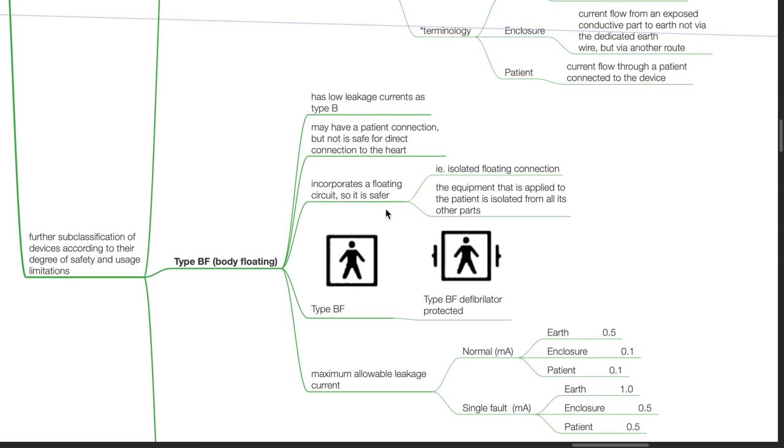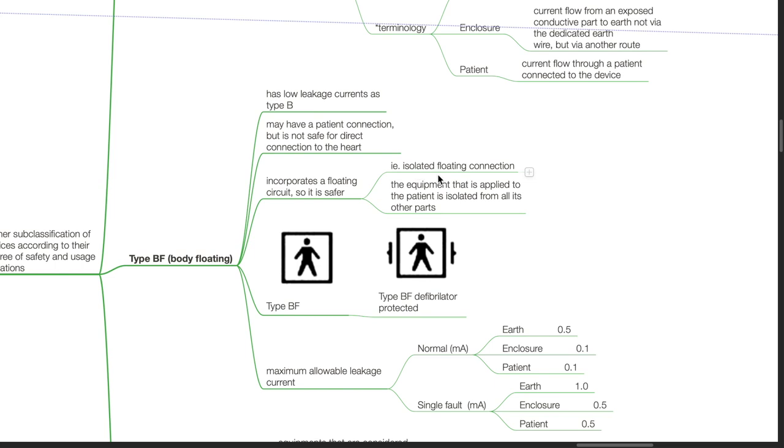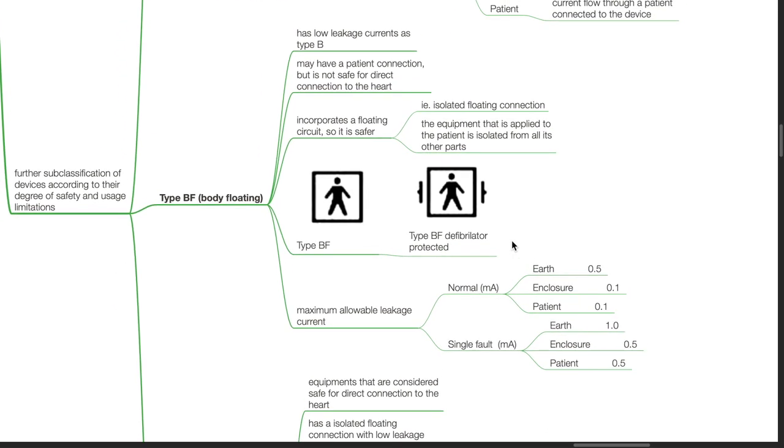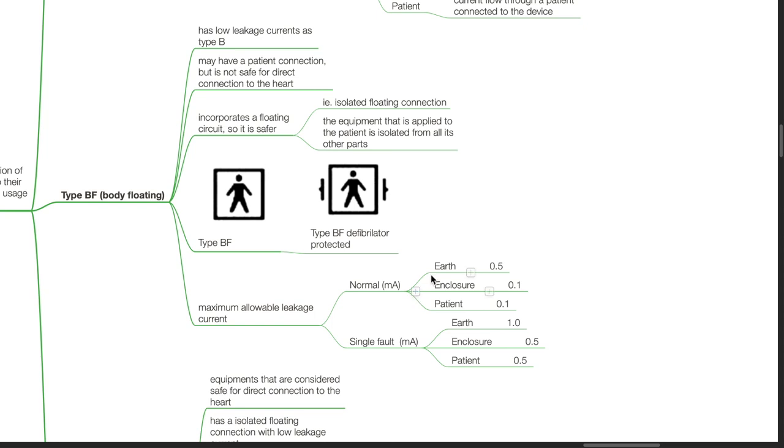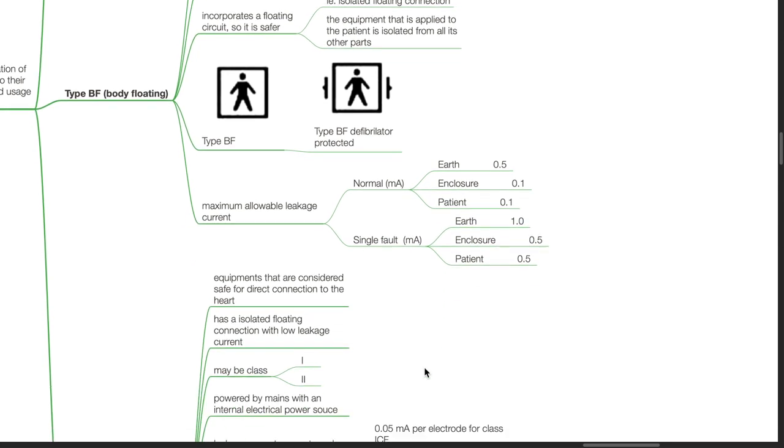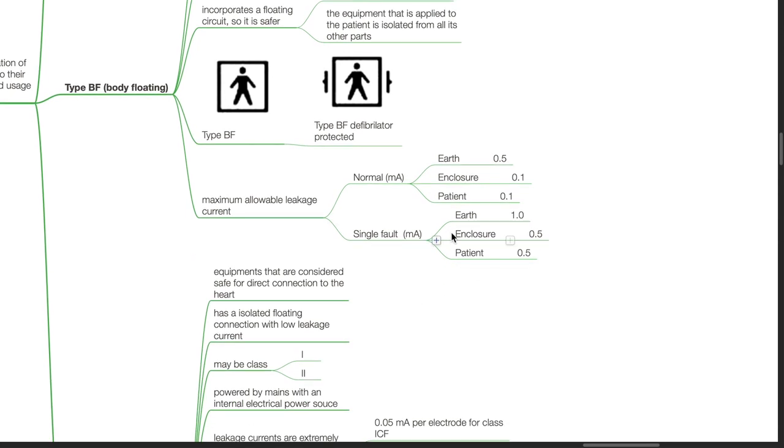Type BF or body floating equipment have low leakage currents as type B and may have a patient connection but are not safe for direct connection to the heart. These equipments incorporate a floating circuit, so they are safer, also known as isolated floating connection. The equipment applied to the patient is isolated from all its other parts. Maximum allowable leakage current under normal conditions: Earth 0.5, enclosure 0.1, patient 0.1 milliamps. During a single fault: Earth 1, enclosure 0.5, patient 0.5 milliamps.